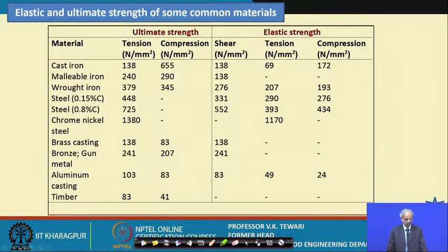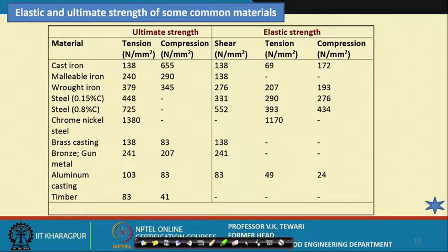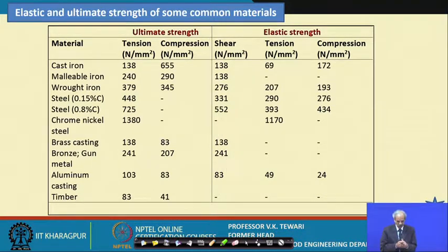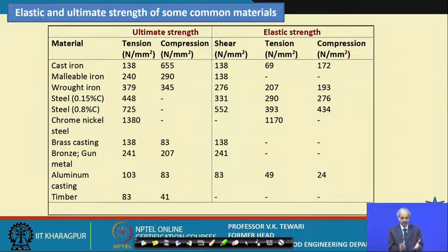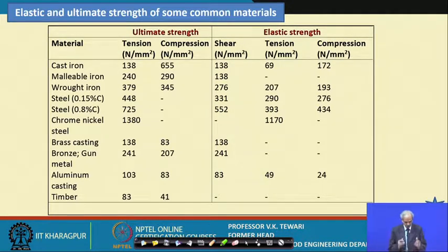The elastic and ultimate strength of some common materials is presented here. We talked of proportionality, the stress-strain curve in ferrous and non-ferrous materials, and their behavior. Now, the different ultimate strength and elastic strength values for cast iron, malleable iron, wrought iron, chrome steel, bronze, aluminum casting, and timbers — in both tension and compression — are given in this table. These will definitely help when designing a particular component for any equipment operation.